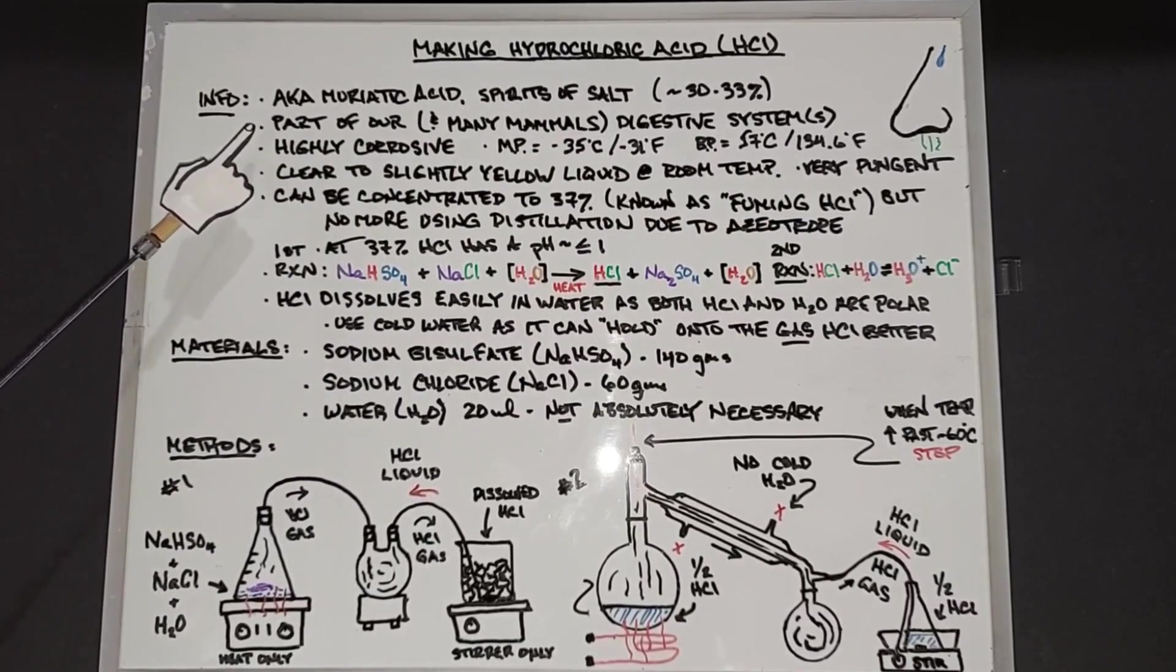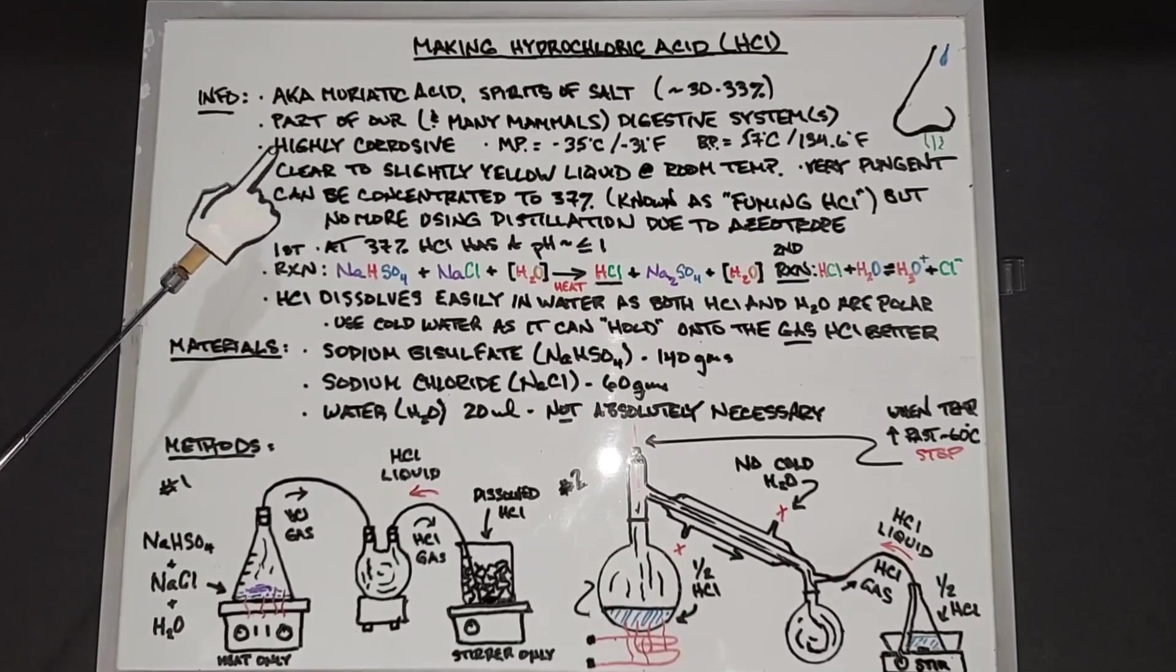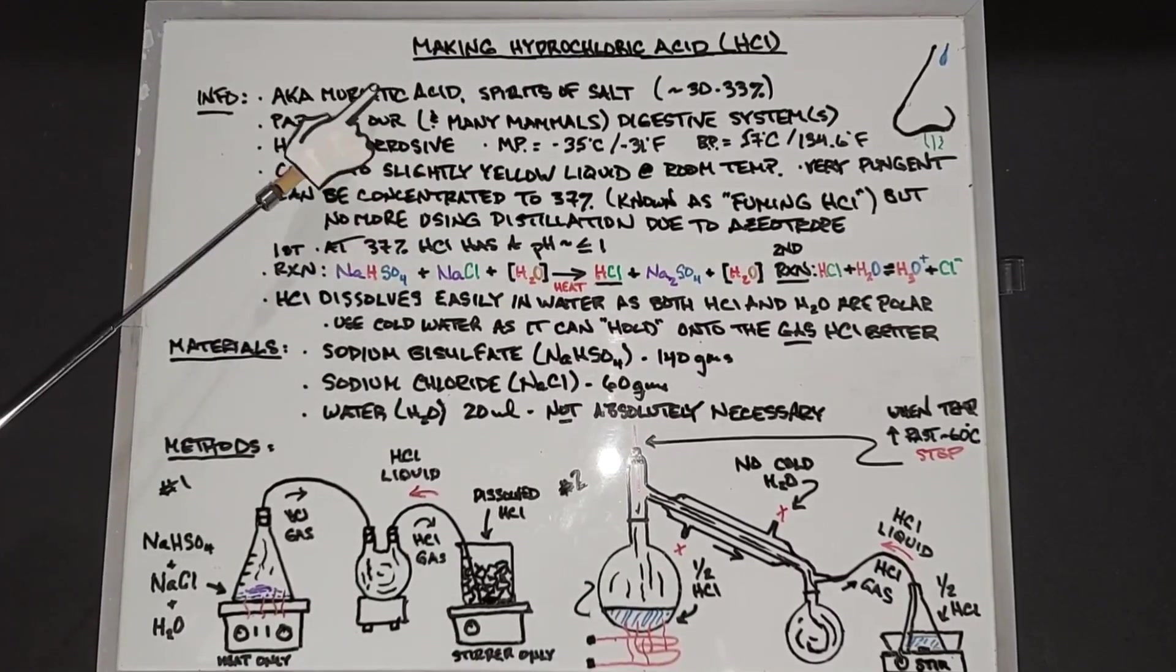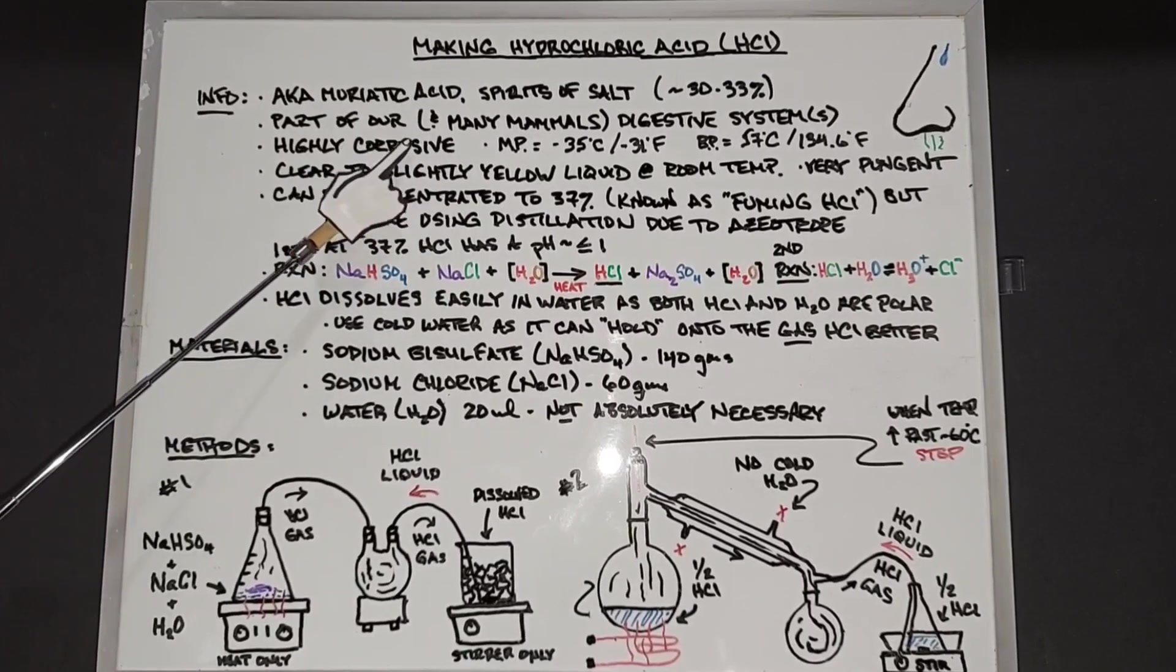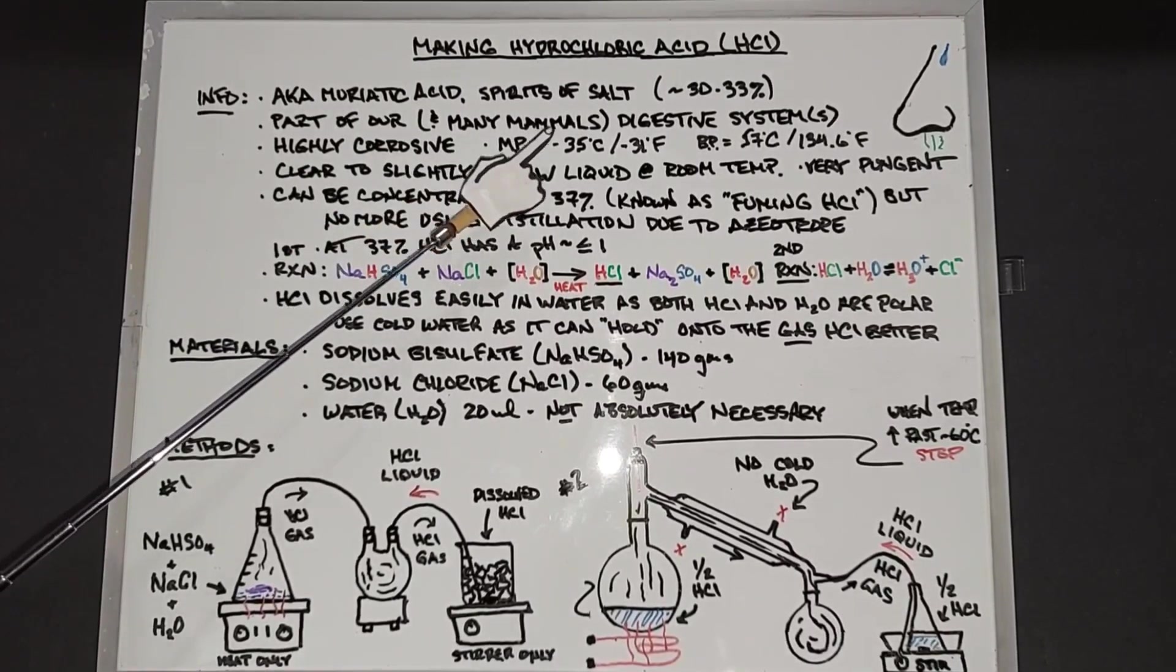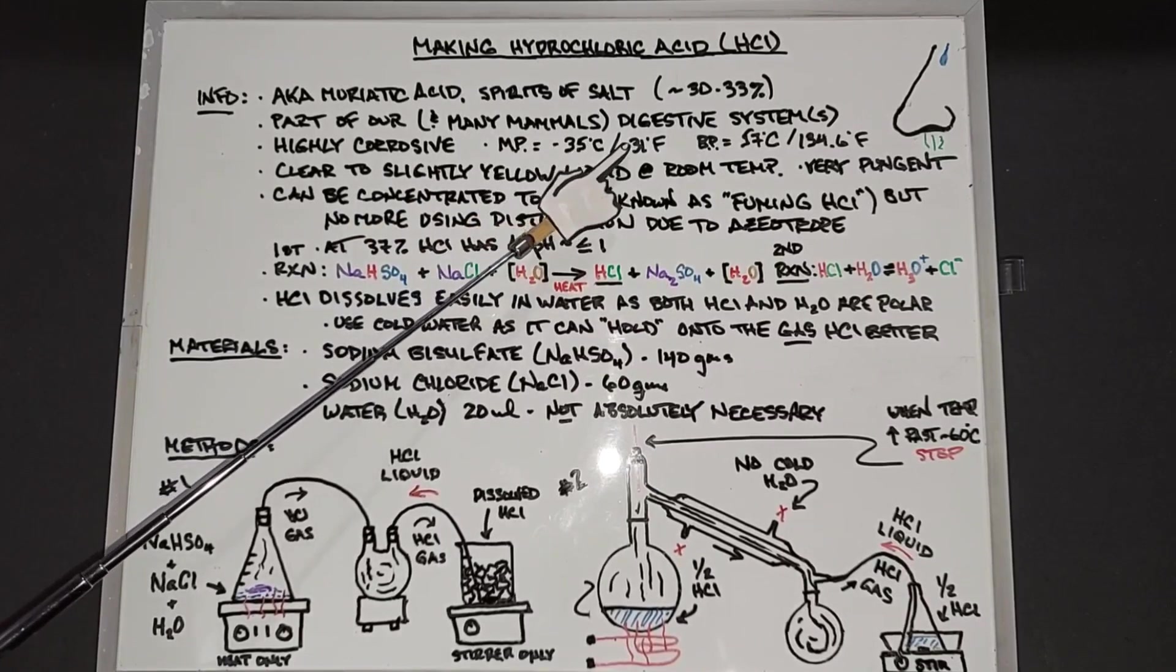We know that hydrochloric acid is what starts the digestion of many of the proteins and carbohydrates. It tends to be around a pH of two. It's highly corrosive, anybody who knows it will attest to that. Muriatic acid is often used to clean concrete.